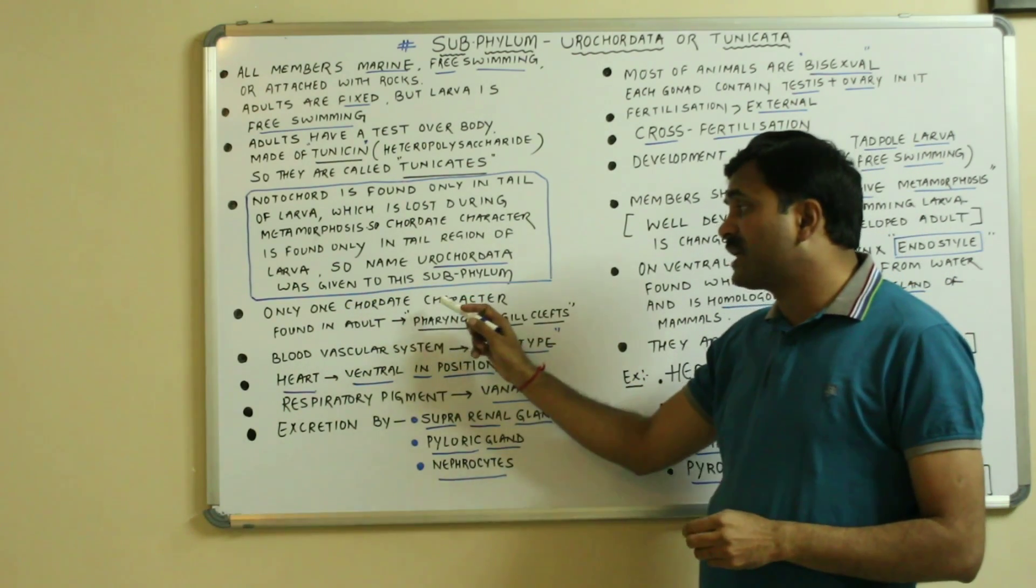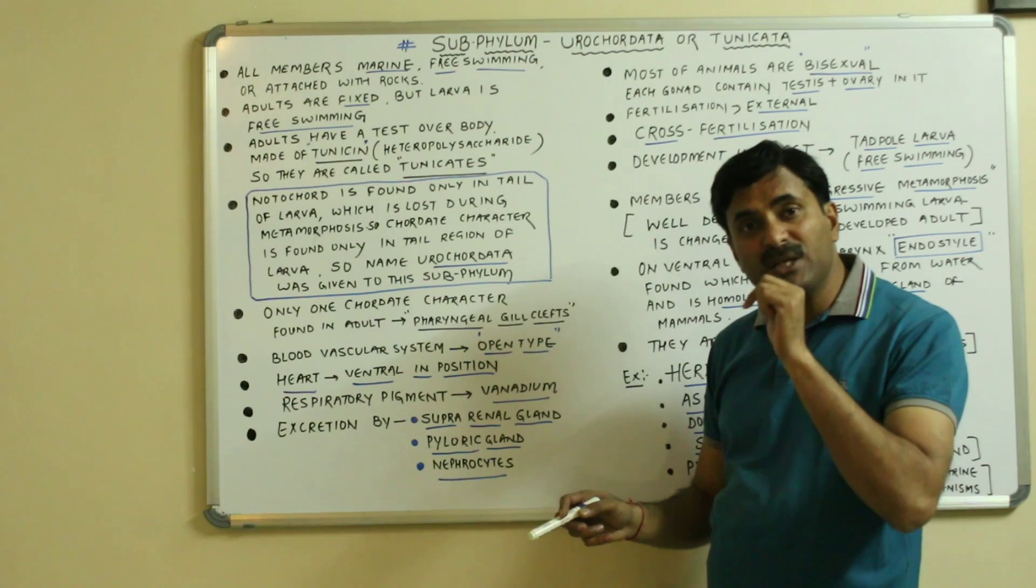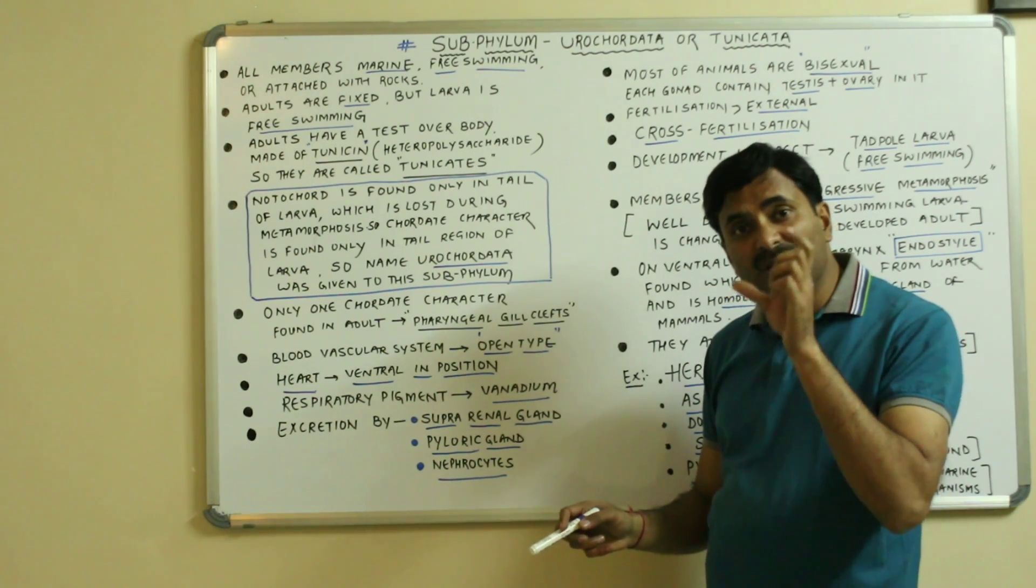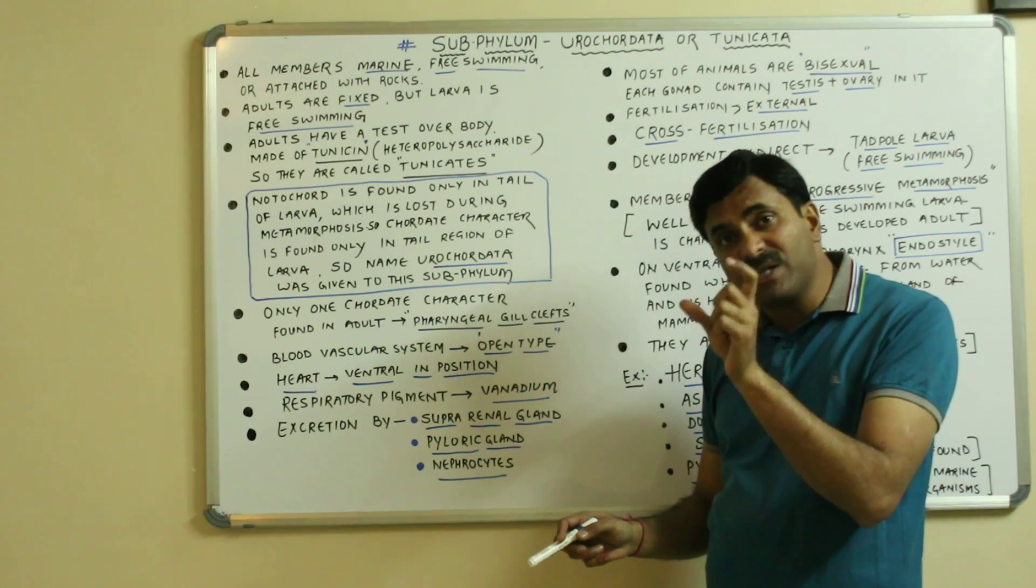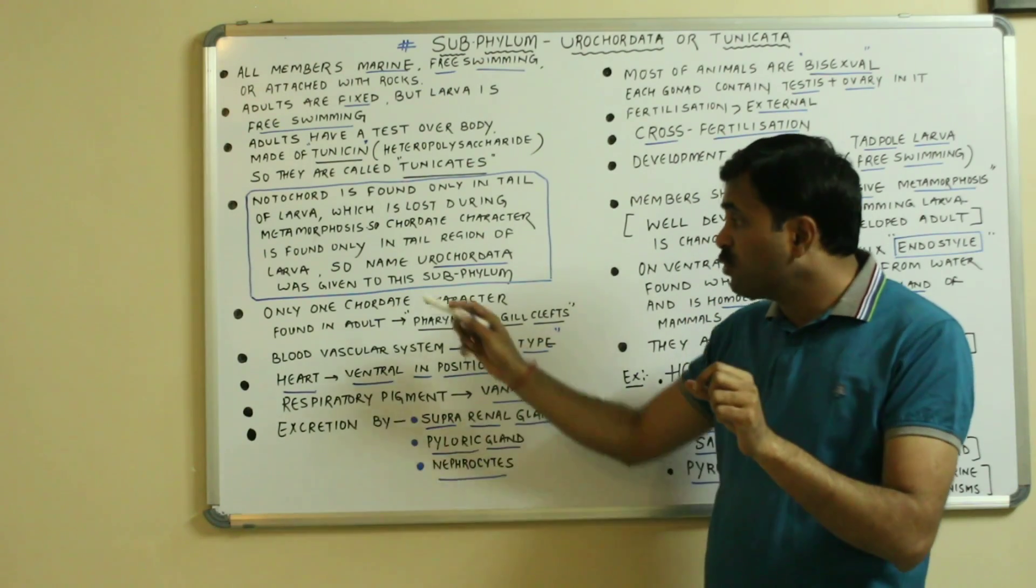Now only one chordate character is found in adult. Normally you will see that the larva is more advanced than the adult in these organisms.